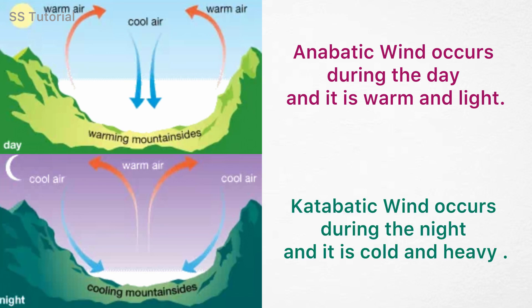Whereas katabatic winds occur during the night and it is cold and heavy. When the mountain surface releases heat rapidly, the mountain and surrounding air cools rapidly. As air cools, it becomes denser and heavier, so it downfalls due to gravity, which is known as katabatic wind.